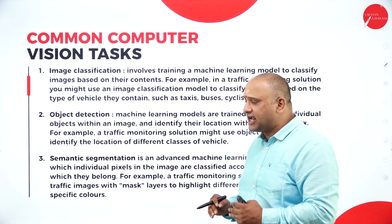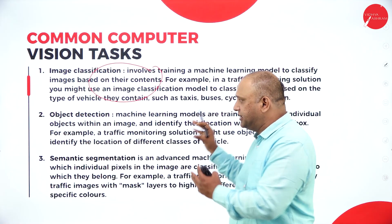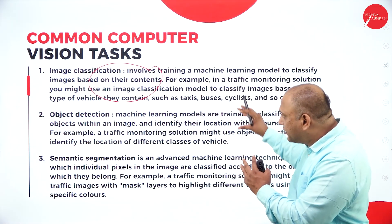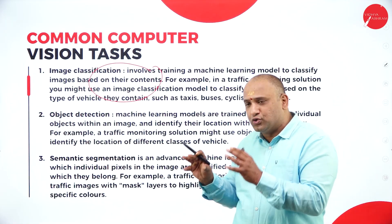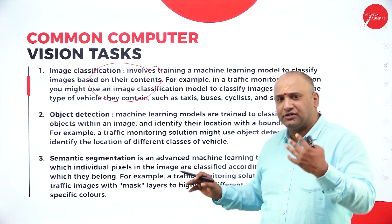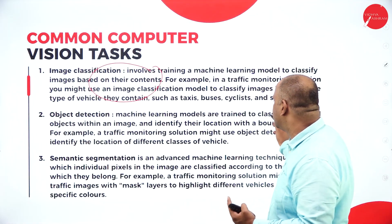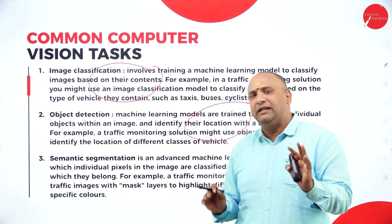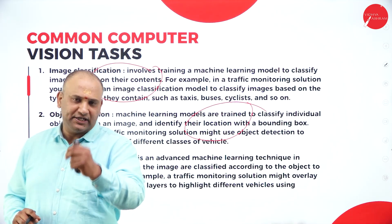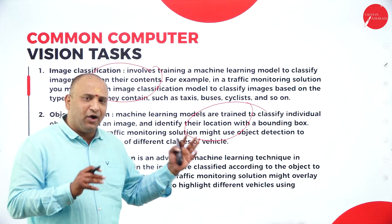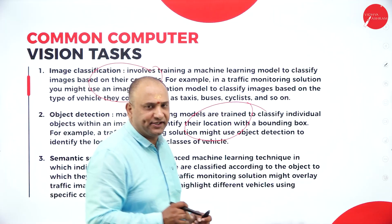Now the common computer vision tasks: first is image classification, which involves training machine learning models based on images and their contents — for example, classifying images based on type of vehicle, movements, or person. Then object detection, which is used to train models to identify individual objects. In traffic monitoring, you can see the number of cars, persons, headcount, type of vehicle, and chassis number.